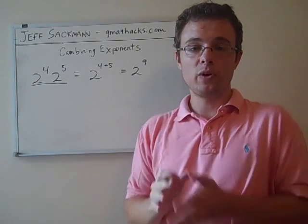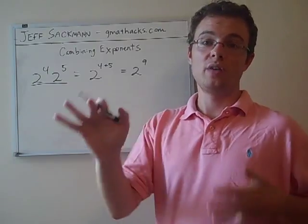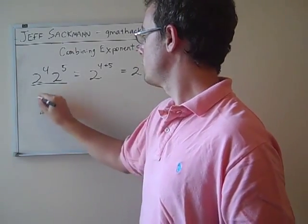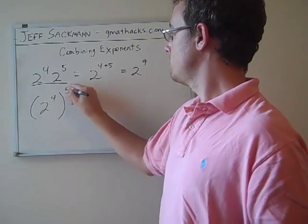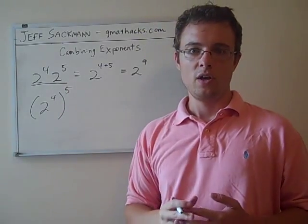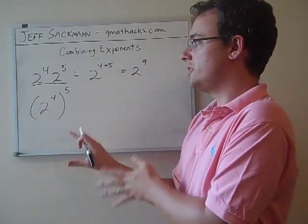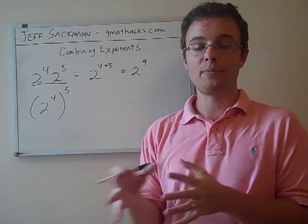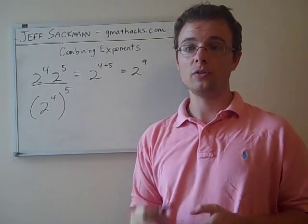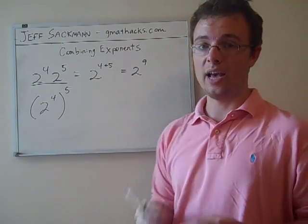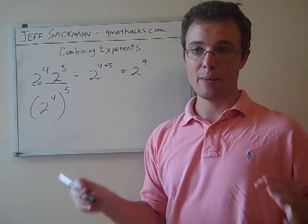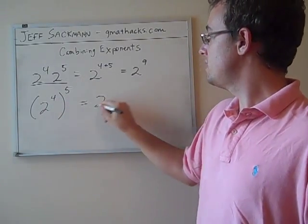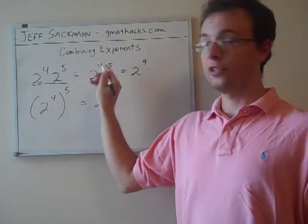Now the next step is when you have an exponent raised to another exponent. So let's say you have 2 to the 4th, and that whole expression is raised to the 5th. Now this isn't something that you're going to see too often as literally part of a GMAT question, but it's a step that might come up when you're working something out. So again, this is something that you need to have rock solid in your mind, memorized.